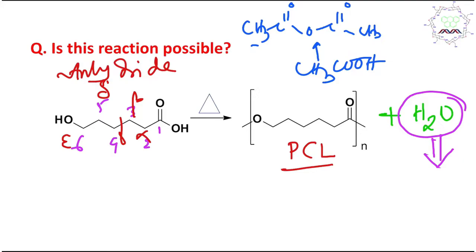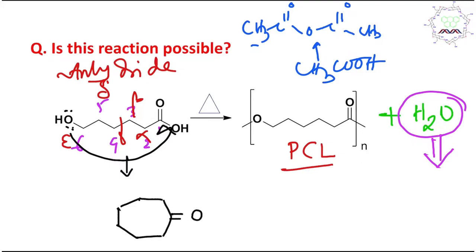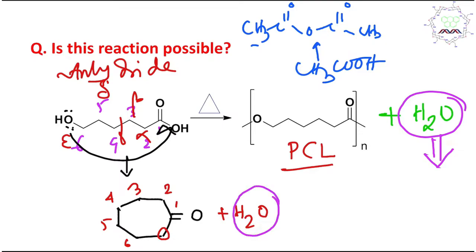The hydroxy acid, 6-hydroxyhexanoic acid, has an advantage: it can form an intramolecular ester or lactone. The hydroxyl oxygen performs nucleophilic attack on the carbonyl carbon, water is eliminated, and a cyclic ester is produced. With six carbons plus one ester oxygen, this forms a seven-membered ring. The dehydration is thus achieved internally, and this is called an intramolecular ester, cyclic ester, or lactone.